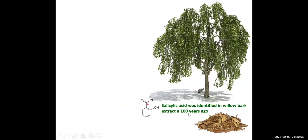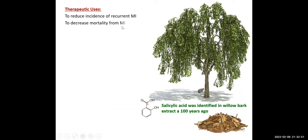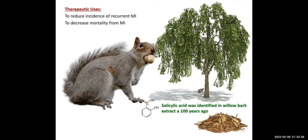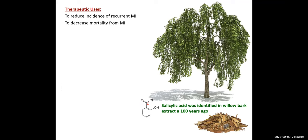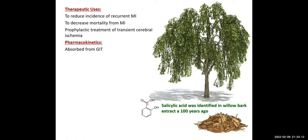Salicylic acid was identified in willow bark about 100 years ago. Therapeutic uses include reducing the incidence of recurrent MI, decreased mortality from MI, and prophylactic treatment of transient cerebral ischemia. In pharmacokinetics, aspirin is well absorbed from the GIT and rapidly hydrolyzed to salicylic acid in the liver. Aspirin is acetylsalicylic acid — salicylic acid with an acetyl group attached.